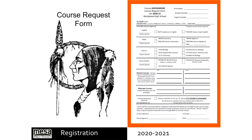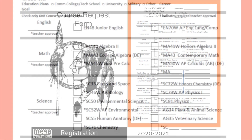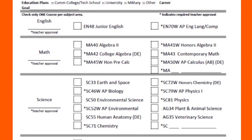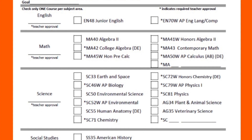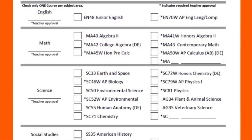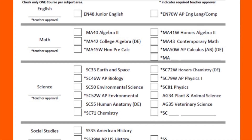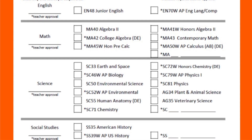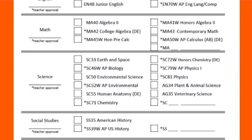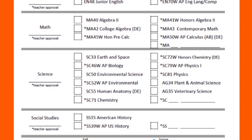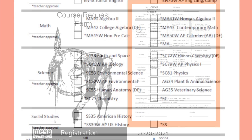Each grade will complete a course request form which is specific for the core curriculum of that grade level. Each core curricular area has a space provided to obtain teacher initials for approval of the student selections. Students are responsible for obtaining teacher approval prior to their online course request submission.